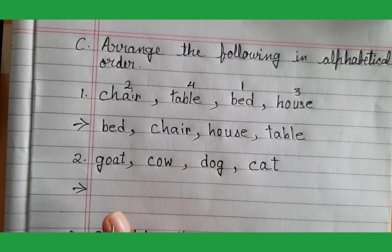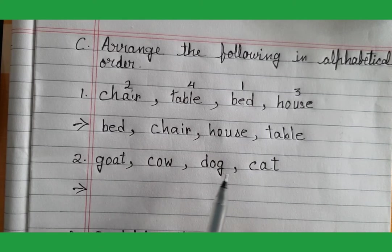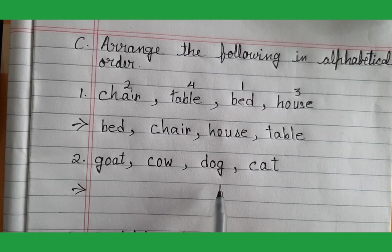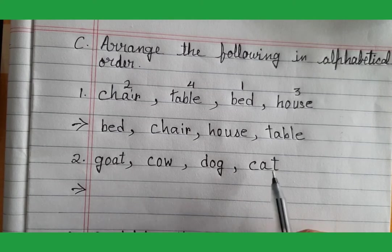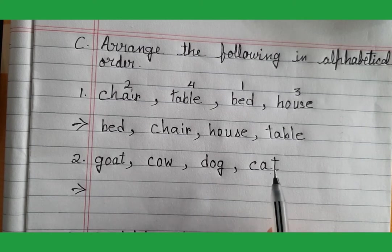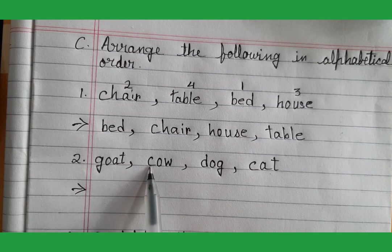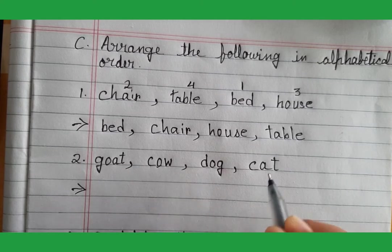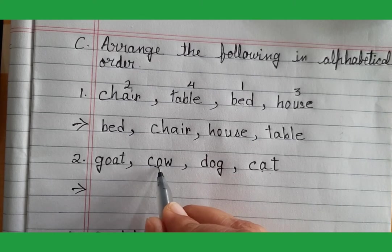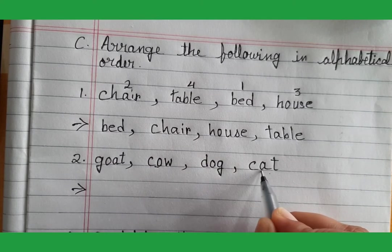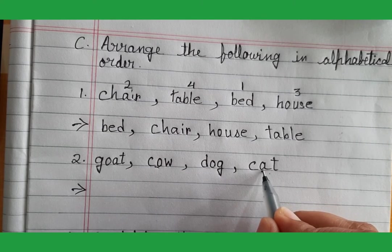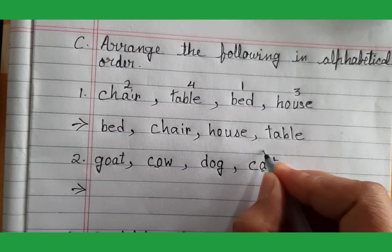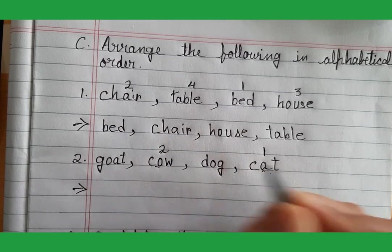Now we will do the next one. Is there any word starting with A? No. B? No. C? Yes — 'cow' and 'cat.' When two words start with the same letter, we have to look at the second letter. The second letter of 'cow' is O and of 'cat' is A. Between O and A, which letter comes first in the alphabet? A. So 'cat' will be first and 'cow' will be second.